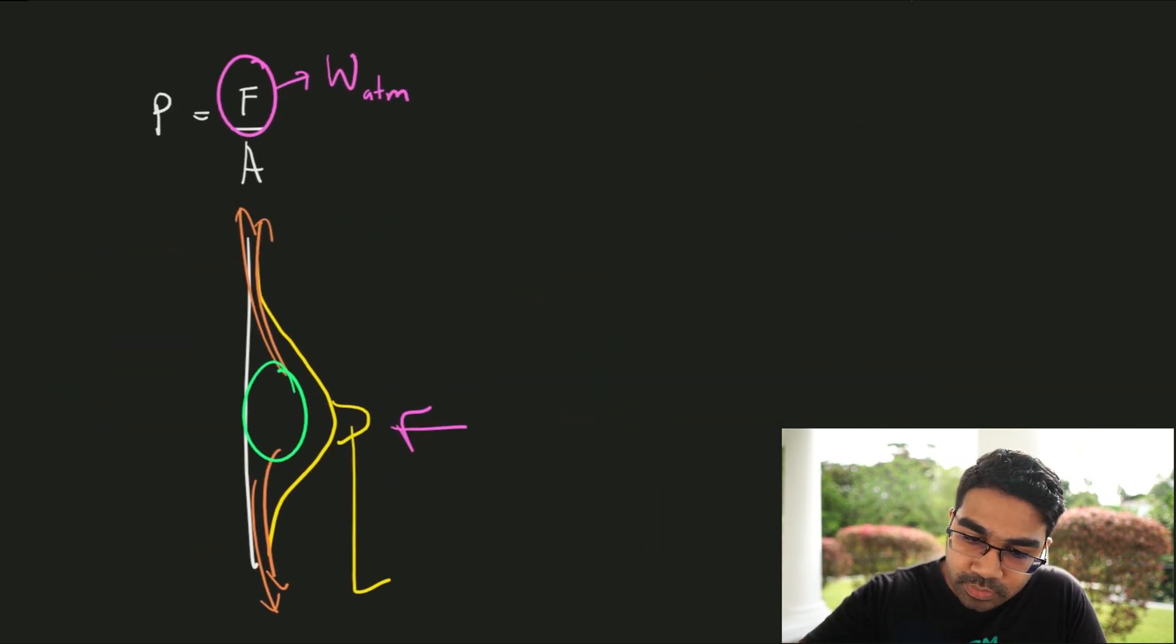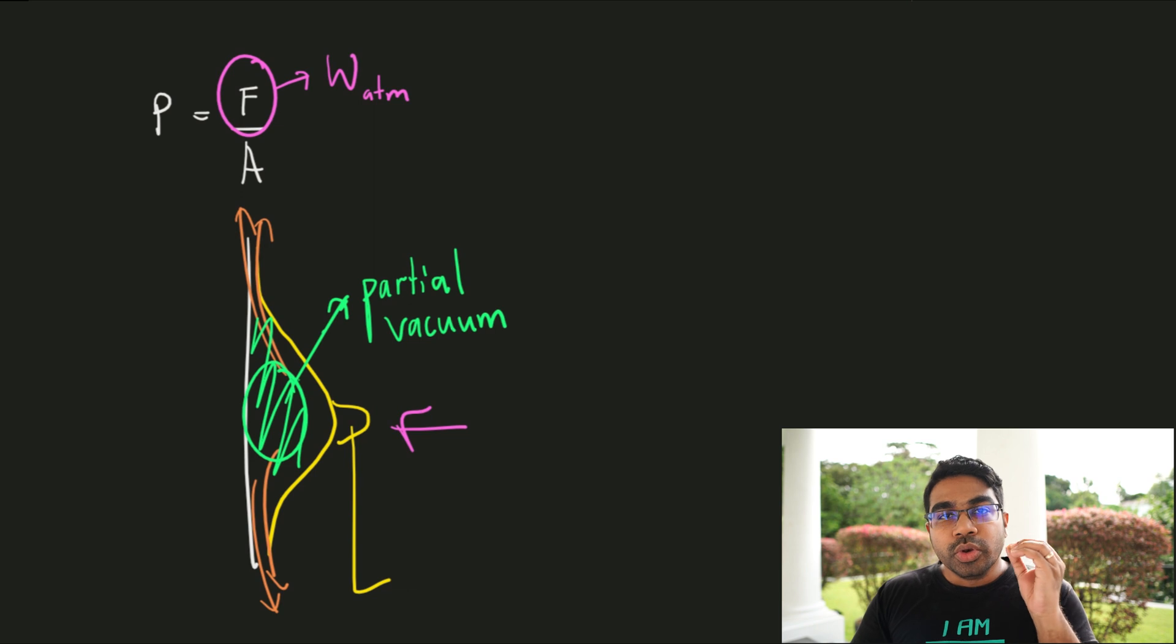So this green region now, this area inside here, this is now a partial vacuum. And for a partial vacuum, there's almost no air. There's very little air particles. And therefore, the pressure is going to drop tremendously.